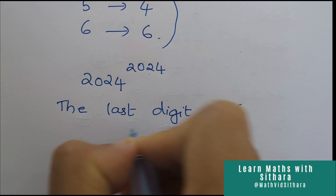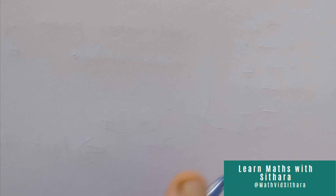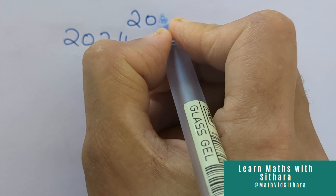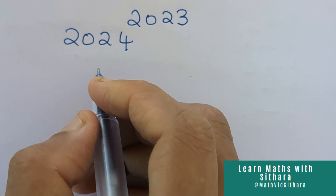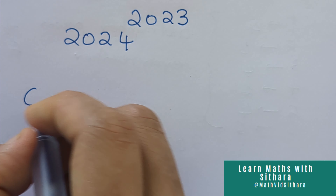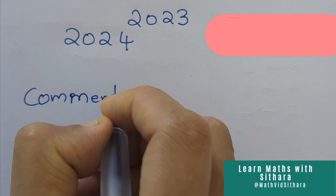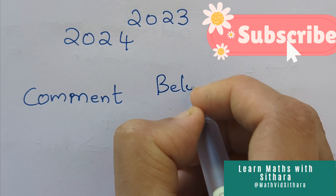Hello everyone. We have to find the last digit of 2024 to the power of 2024. Since we have to find the last digit, we need only to focus on 4.